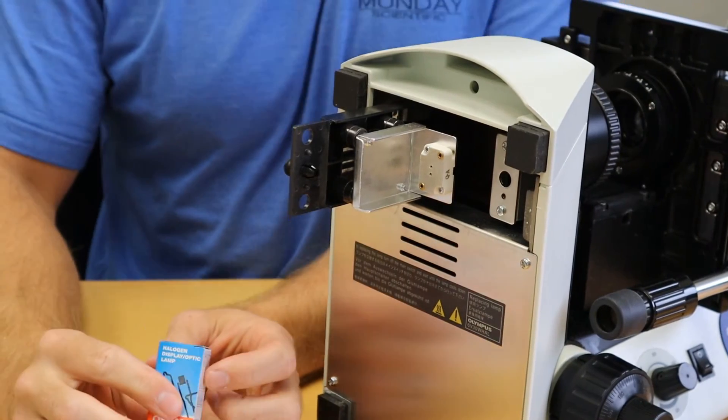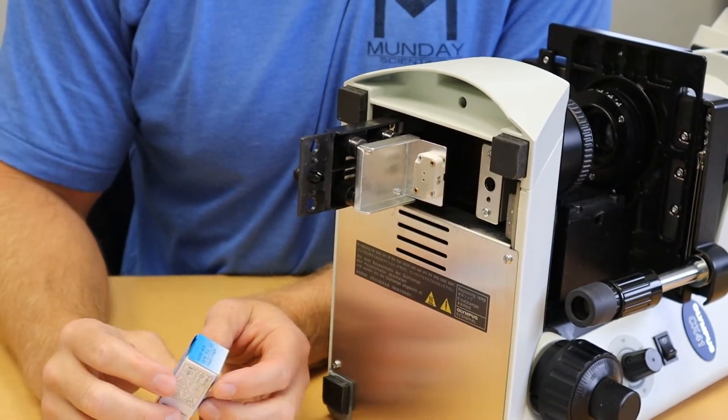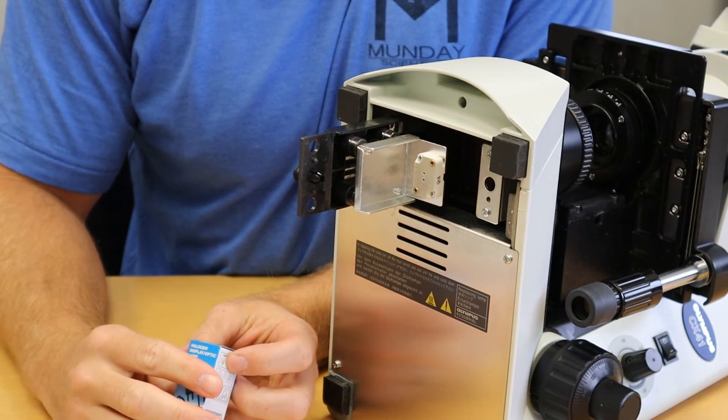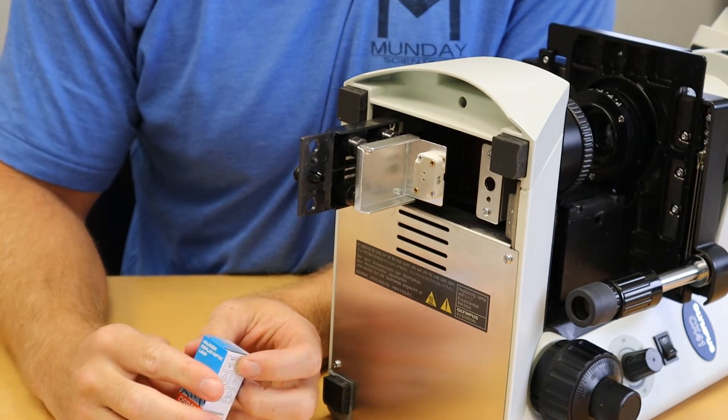And then we're going to put the new bulb in. It's going to be an Osram 6-volt 30 watt bulb, Osram 64265.